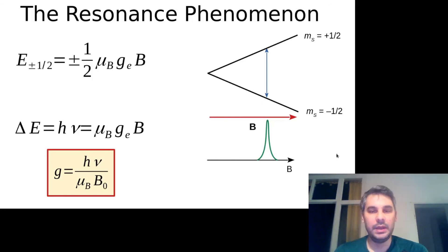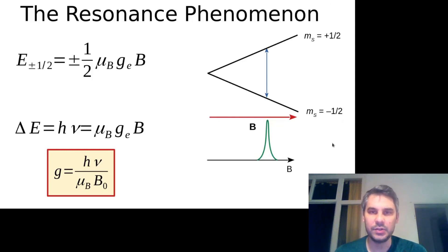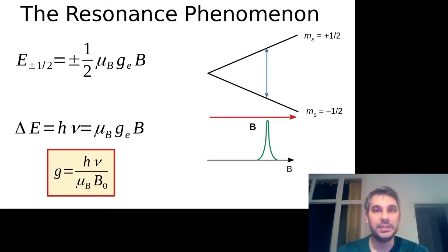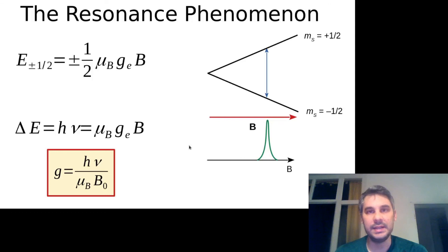In further videos I will go into more detail on the workings of an EPR spectrometer, how the signal is obtained, and the details of the spin Hamiltonian and how different quantities are calculated. We will also see hyperfine structure — the effect of interaction with different nuclei — anisotropy of the g value, and many other spin-spin interactions, which make EPR a very interesting and useful technique in material science, organic chemistry, inorganic chemistry, catalysis, and many other topics. I hope you found this video useful — thank you very much.